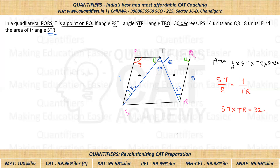Since ST × TR = 32, we can now calculate the area. Area = half × 32 × sin(30) = half × 32 × (1/2) = 32/4 = 8. So 8 is the correct answer.